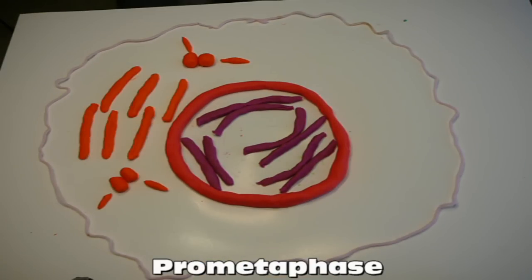In the prometaphase, the nuclear envelope breaks down and eventually disappears. Microtubules from the centrosomes at each pole reach out to the chromosomes, which at this point have become extremely compact. When the microtubules reach them, they connect to the kinetochore and they begin to move into the center of the cell.